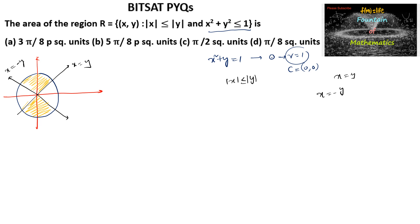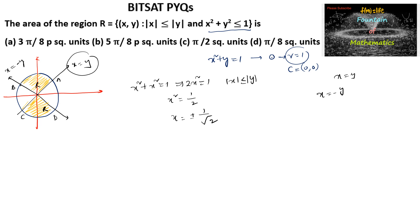We find the four intersection points A, B, C, and D. Substituting X = Y into the circle equation: X² + X² = 1, which gives 2X² = 1, so X² = 1/2 and X = ±1/√2. Thus point A is (1/√2, 1/√2), point B is (1/√2, -1/√2), point D is (-1/√2, 1/√2), and point C is (-1/√2, -1/√2).